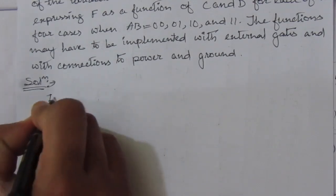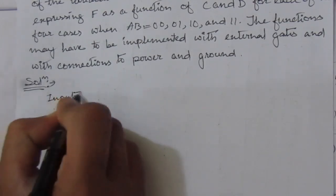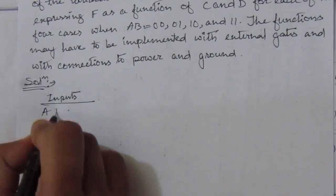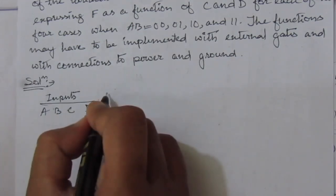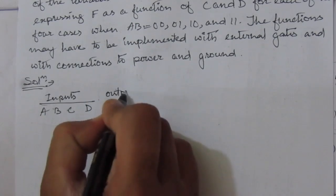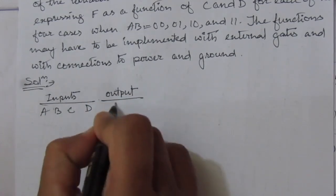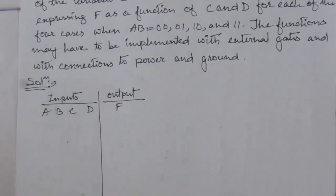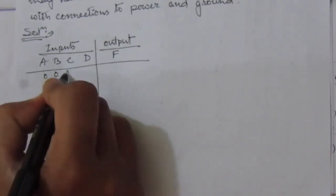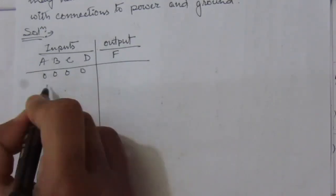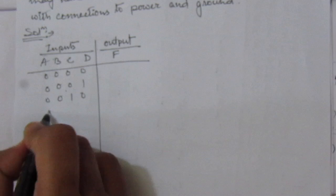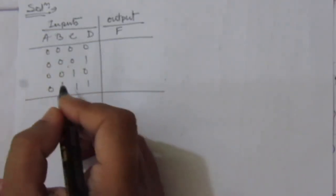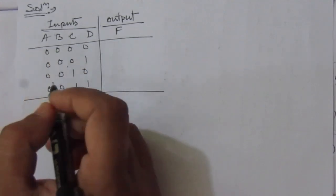The inputs are A, B, C, and D, and the output is F. For the first group where AB equals 00, we have input combinations: 0,0,0,0 then 0,0,0,1 then 0,0,1,0 then 0,0,1,1. This will be one case, that is AB equal to 00.